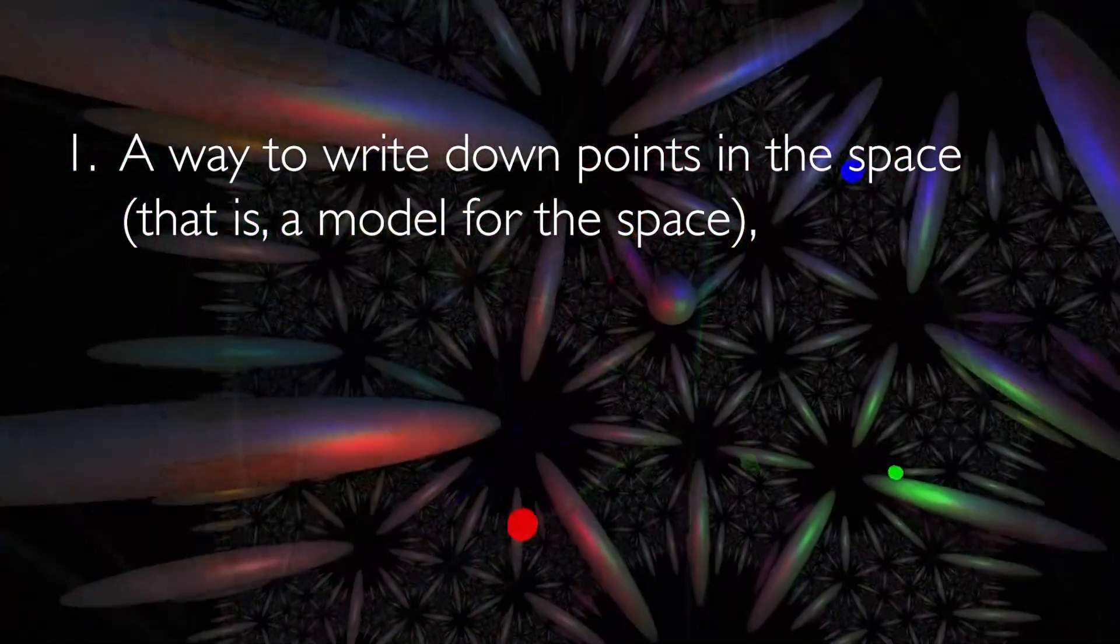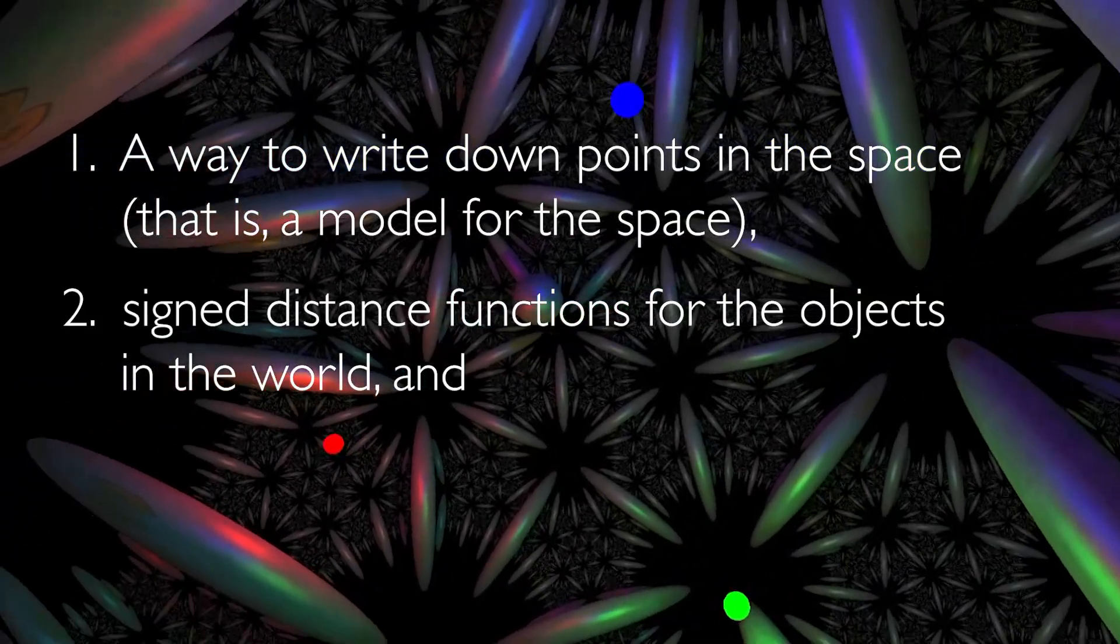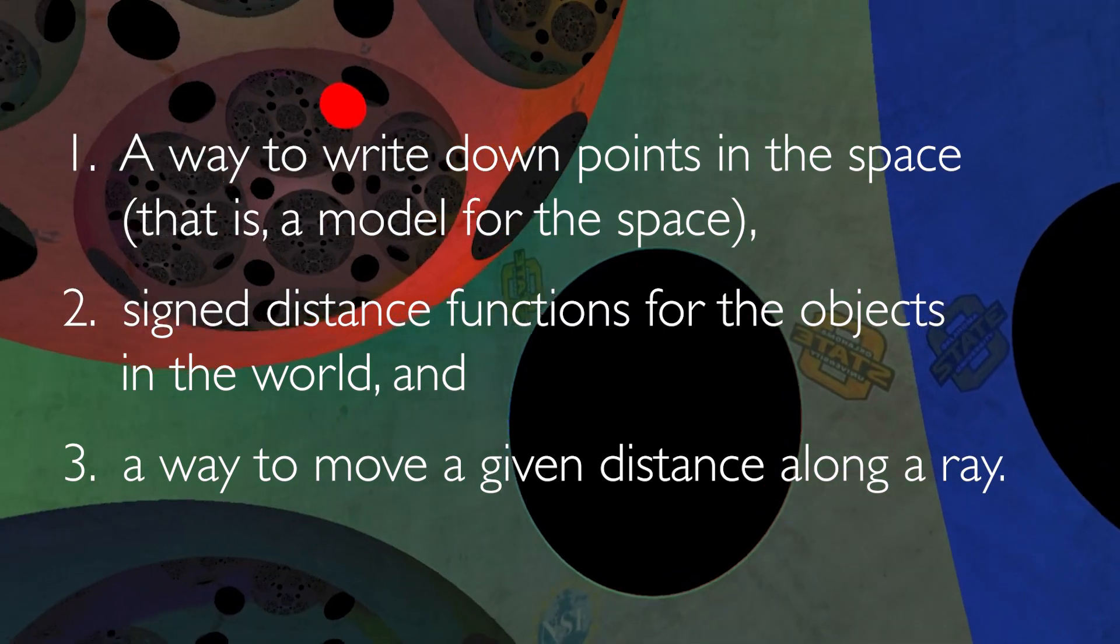But all you need for any kind of geometry are first a way to write down points in the space, second signed distance functions for the objects in the world, and third a way to move a given distance along the ray.